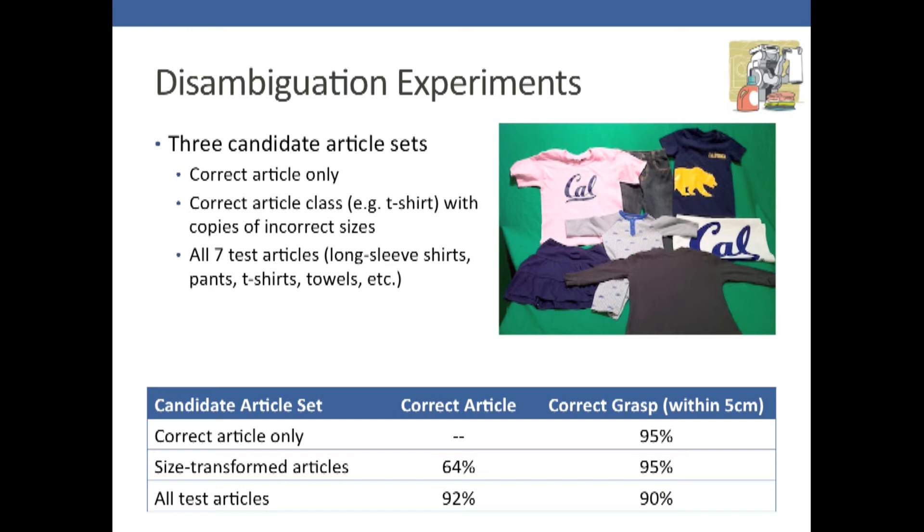The last test set was all seven test articles pictured here. All of these were never before seen except for the mesh generation. There's no parameters trained on any of these articles. It picks out the correct article 92% of the time and the correct grasp points on the correct article 90% of the time.